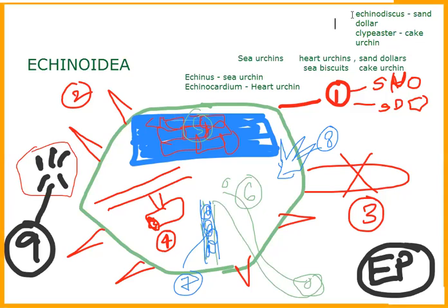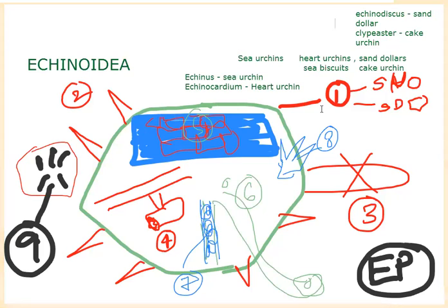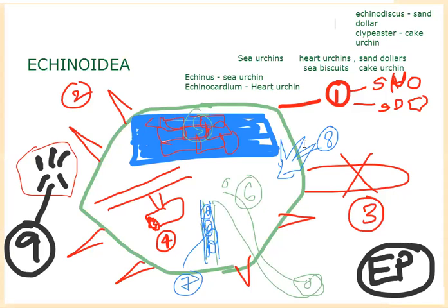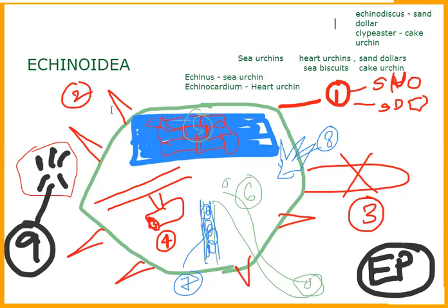Let me say once again: the class Echinoidea is commonly called sea urchins, heart urchins, sand dollars, sea biscuits, or cake urchins. Number one: body is ovoid or discoid — ovoid in sea urchin, discoid in sand dollar. Number two: the body is covered by movable spines.